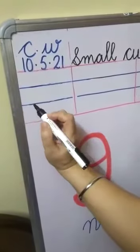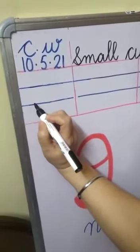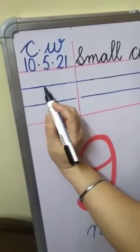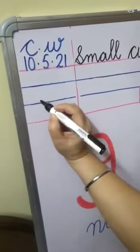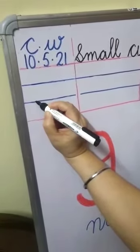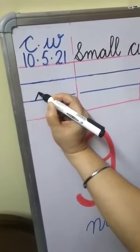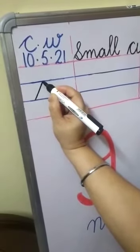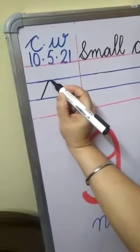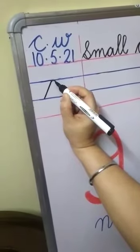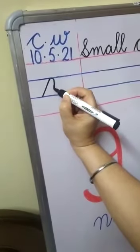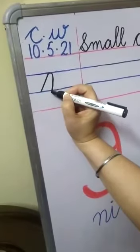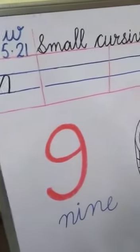I will teach you the first step of N. Start from the lower blue line and go slantingly up to the upper blue line. Start from here, go slantingly up to the upper blue line. Touch here, make a small round and come little bit slantingly down up to the lower blue line. This is our first step of N.